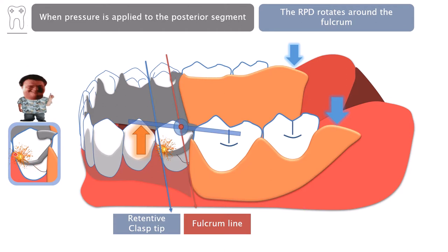That force might avulse the tooth and that is not acceptable. The reason this is happening is because the fulcrum line exists right in the middle between the denture base area in the back that's being pushed downwards and the retentive clasps that are being pushed upwards.